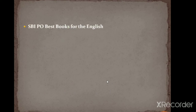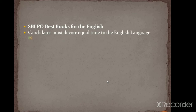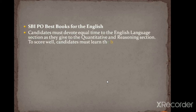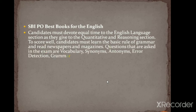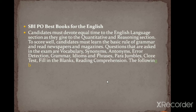Then SBI PO best books for English. Candidates must devote equal time to the English language section as they give to the quantitative and reasoning sections. To score well, the candidate must learn the basic rules of grammar and read newspapers and magazines. Questions that are asked in exams include vocabulary, synonyms, antonyms, error detection, grammar, idioms and phrases, para jumbles, cloze test, fill in the blanks, and reading comprehension.